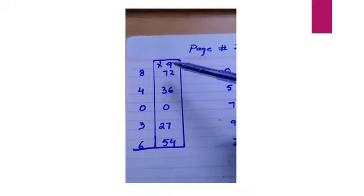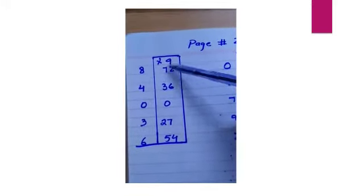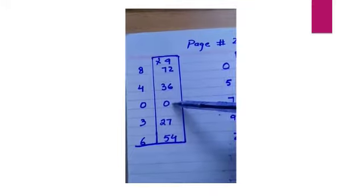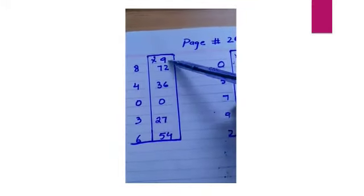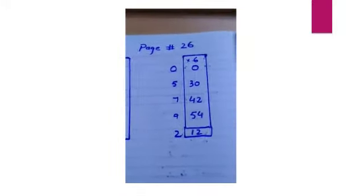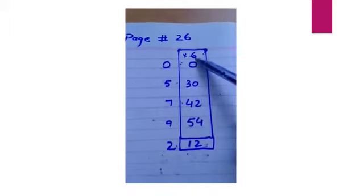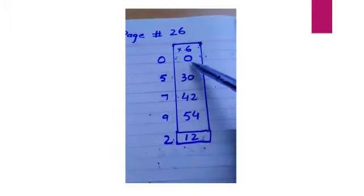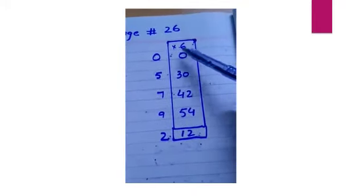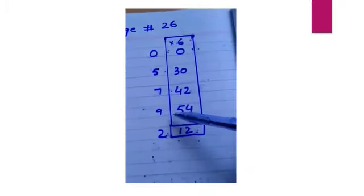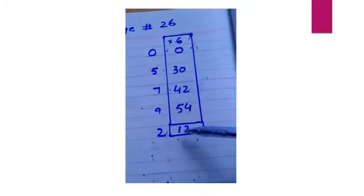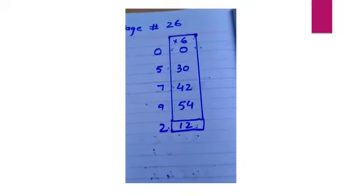Student, I have made some tables. 9 times 8 is 72, 9 times 4 is 36, 9 times 0 is 0. Write the answer here. 9 times 3 is 27, 9 times 6 is 54. Next table is 6. 6 times 7 is 42, 6 times 9 is 54, 6 times 2 is 12. Let's do it in the book. I have made these 2, 9 and 6. Now let's move to table number 5.